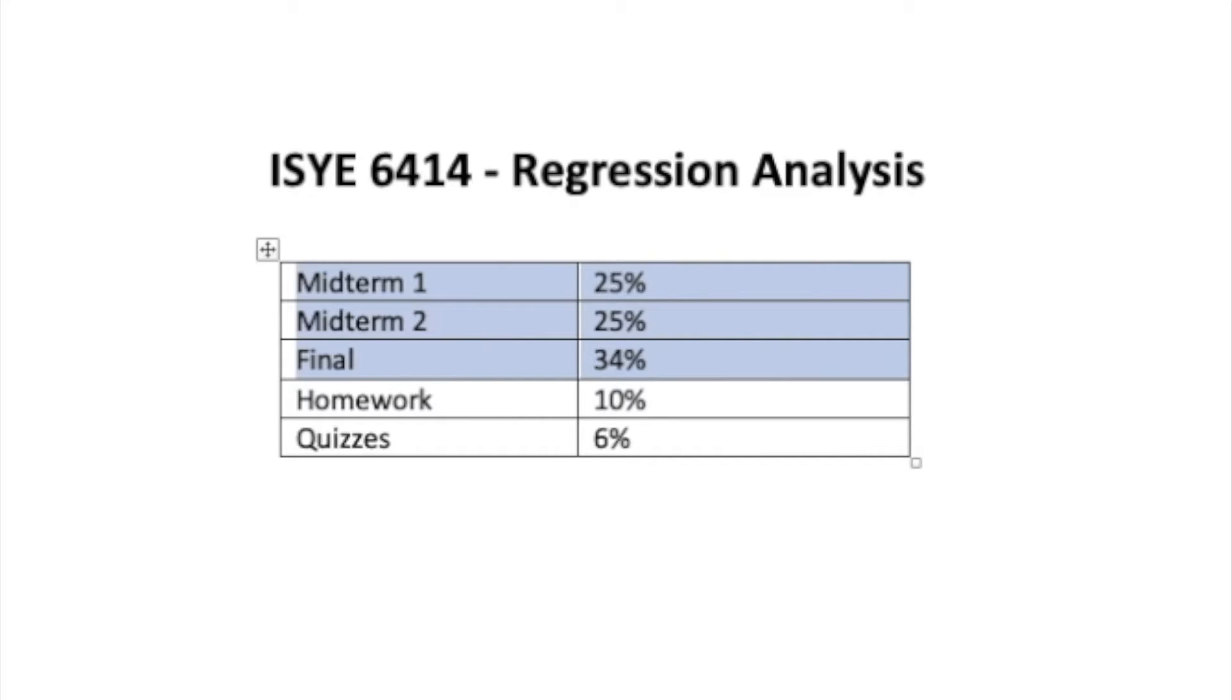The second part is a coding exam. The coding exam is 60% of the overall 100% of a given exam. So 60% is coding, 40% is that closed book multiple choice.